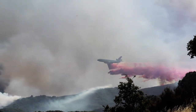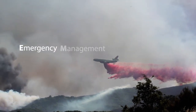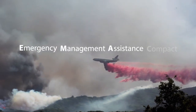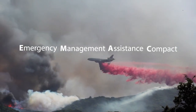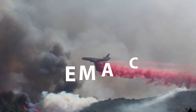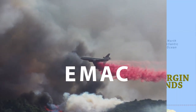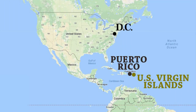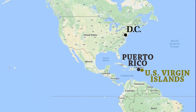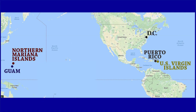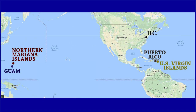Within the Mutual Aid System is the Emergency Management Assistance Compact, commonly known as EMAC, which includes all 50 states as well as the District of Columbia, Puerto Rico, the U.S. Virgin Islands, Guam, and the Northern Mariana Islands.